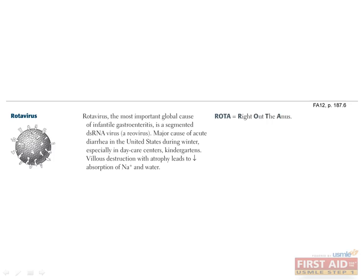This double-stranded, segmented RNA virus — rotavirus — is a common cause of diarrhea in children. It is highly transmissible via the fecal-oral route and seen frequently in the winter in daycare centers and kindergartens. Treatment involves supportive care, but there is a vaccine currently recommended for infants in the U.S.